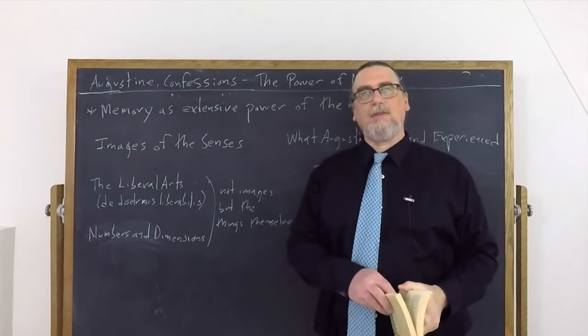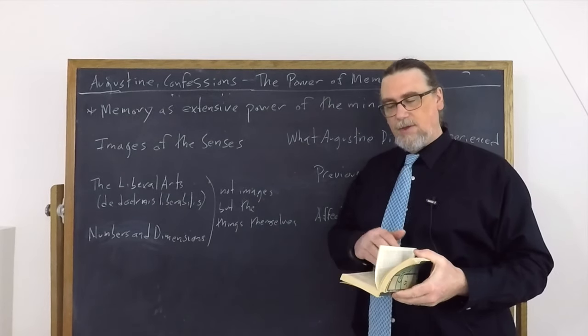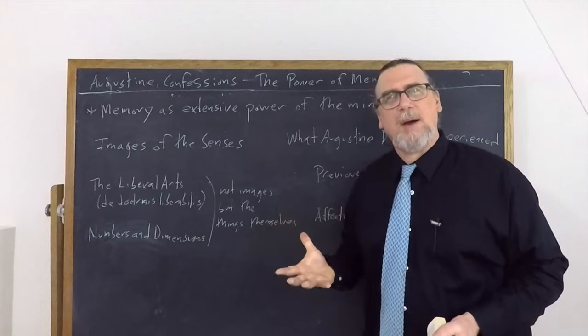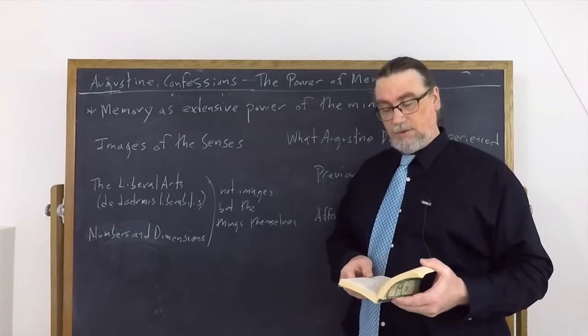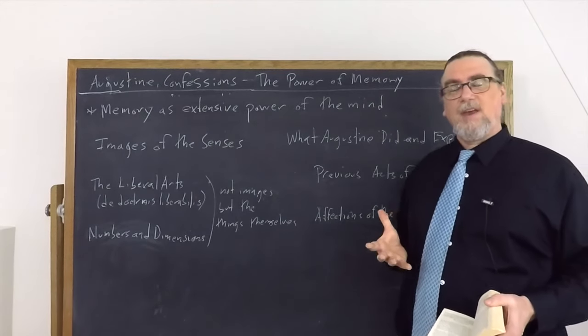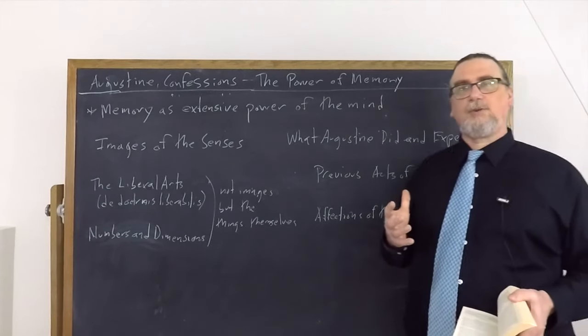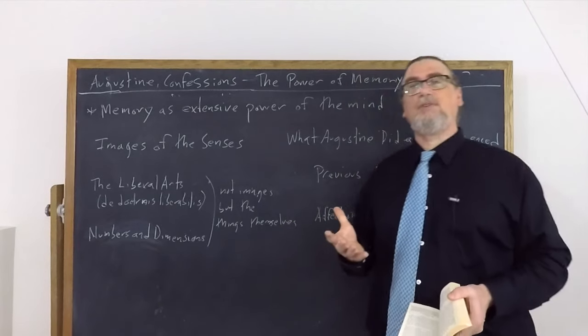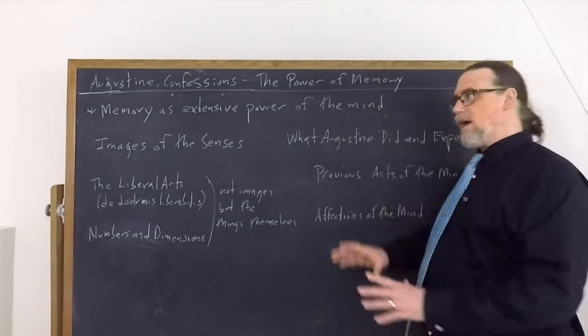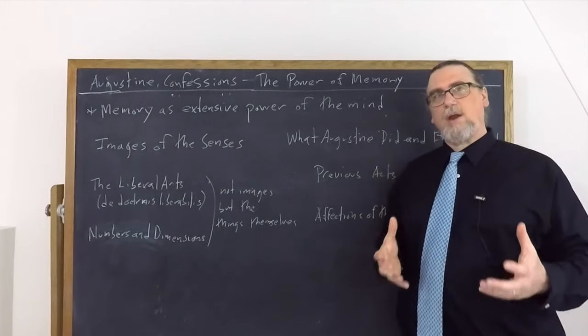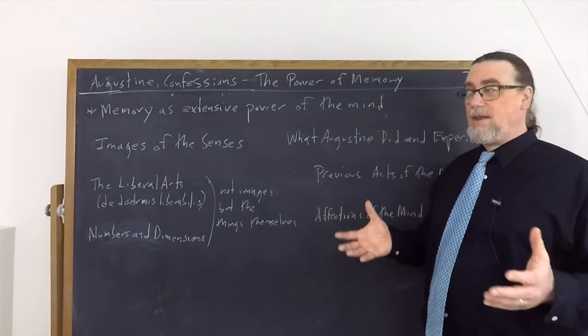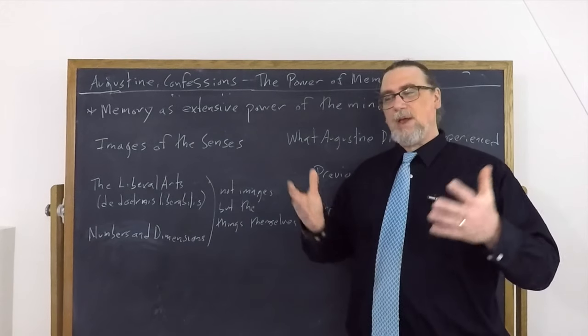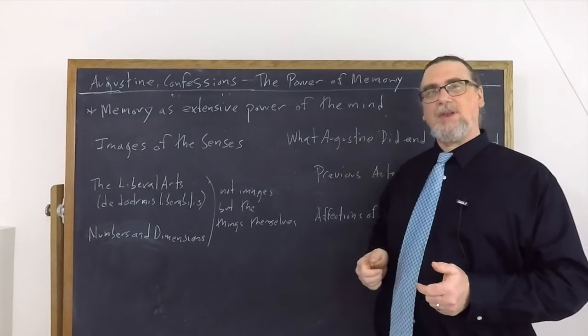And later on in the book, he's going to go on and try to think about the happy life. What it is that we all truly desire. Is that in the memory? If it is, why don't we remember it? And he's going to conclude that the happy life is in a certain sense the thing that we all seek. It is in our memory, but it has to be clarified. It has to be understood. And this is going to lead him to try to seek out whether truth itself lies in the memory and whether God himself lies within the memory. But that goes a little bit beyond the scope of these initial discussions of this incredibly powerful and multifaceted faculty of the human mind. That is our memory, which we so easily take for granted because we use it all the time without considering what it really is and what it can do.